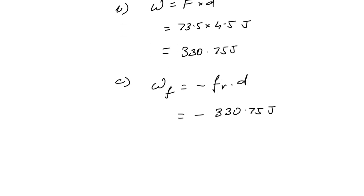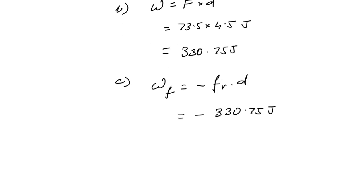So it will be negative work. Next, part (d), how much work is done on the crate by the normal force? The work done by the normal force will be equal to zero, and the work done by gravity will be equal to zero because they are acting perpendicular to the displacement.